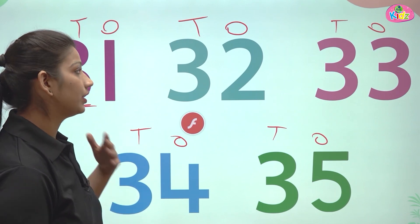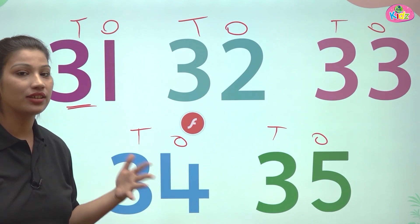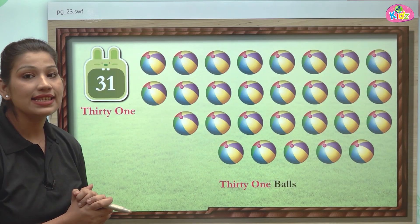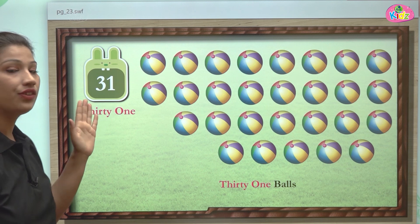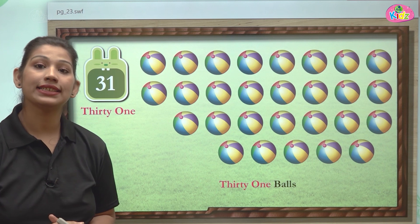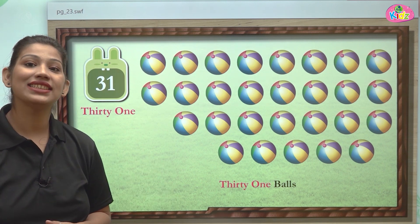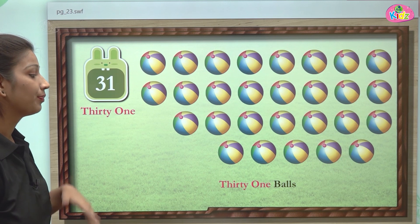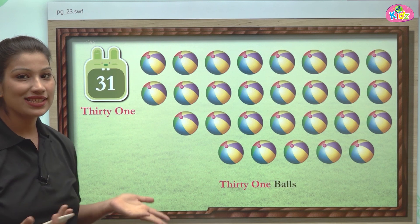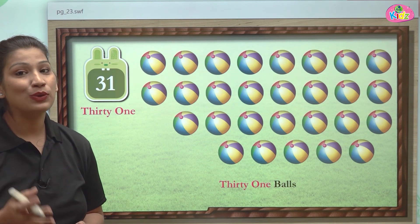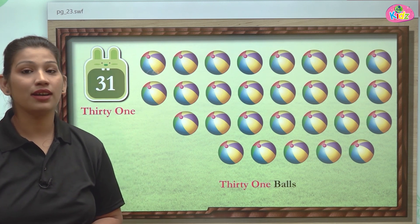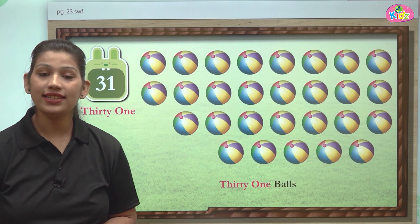Let us understand more about 31, 32, 33, 34, and 35 with the help of a video. Here students, we can see number 31. And here we can see balls which are 31 in number. This is the number 31. Do you know how to write 31? You all know the number name of 30: T-H-I-R-T-Y.